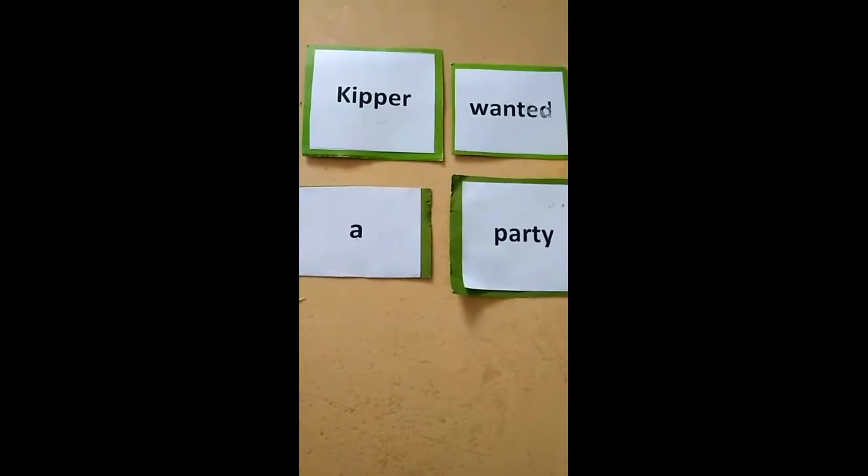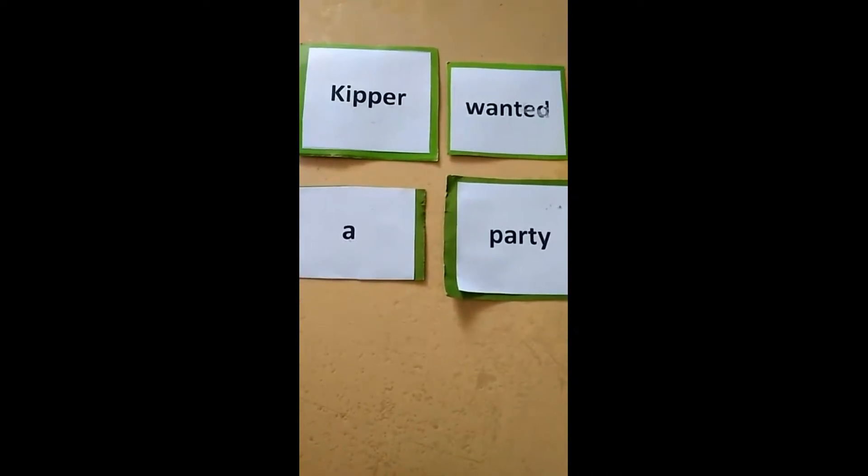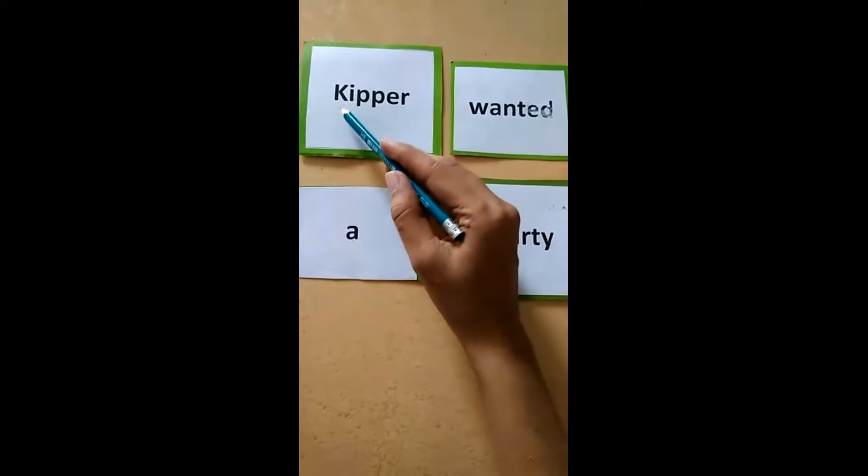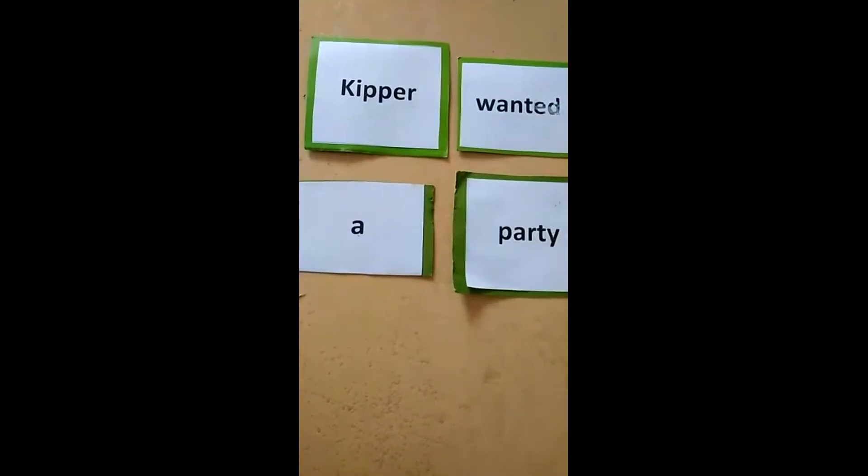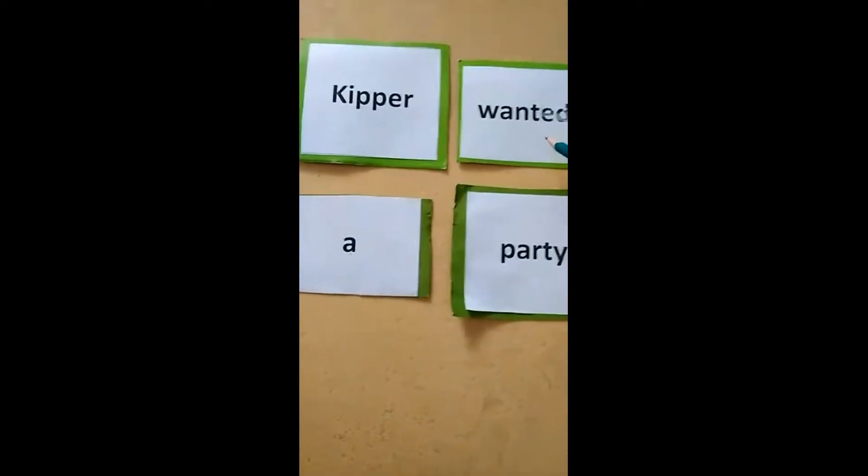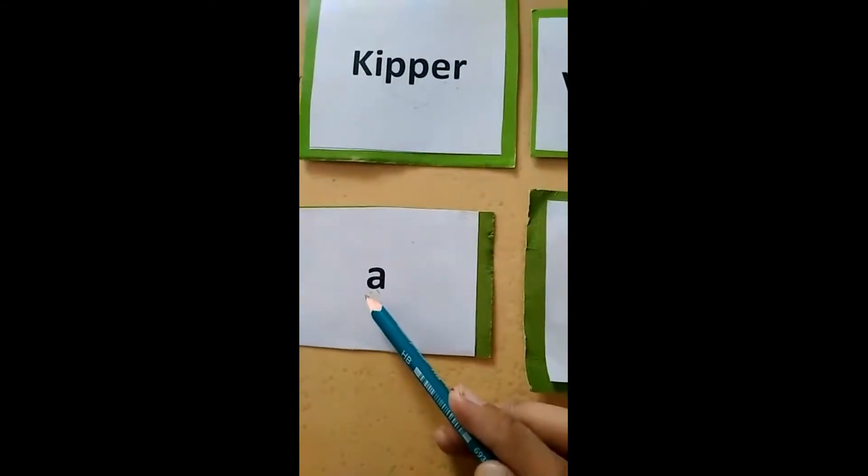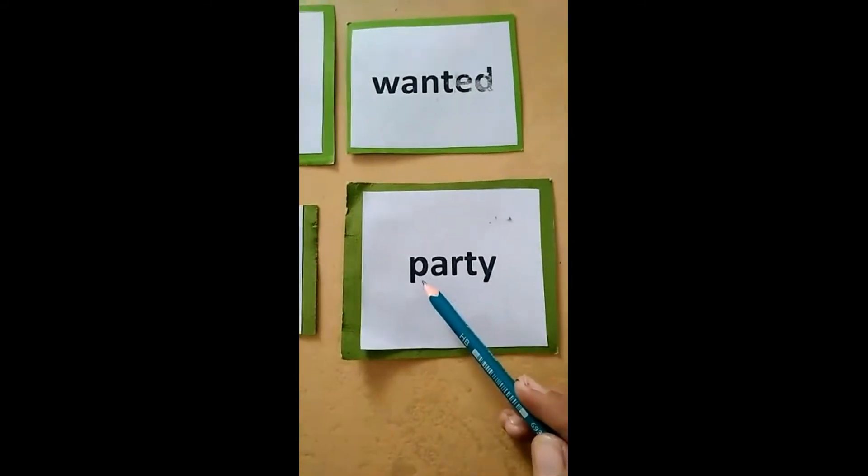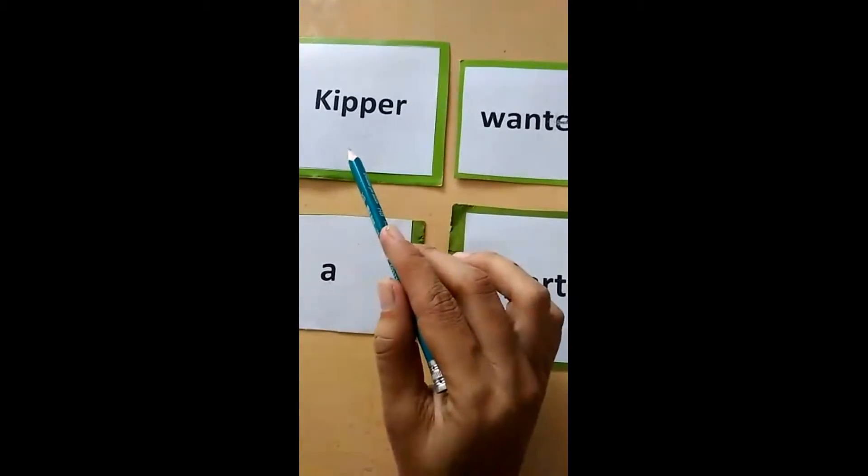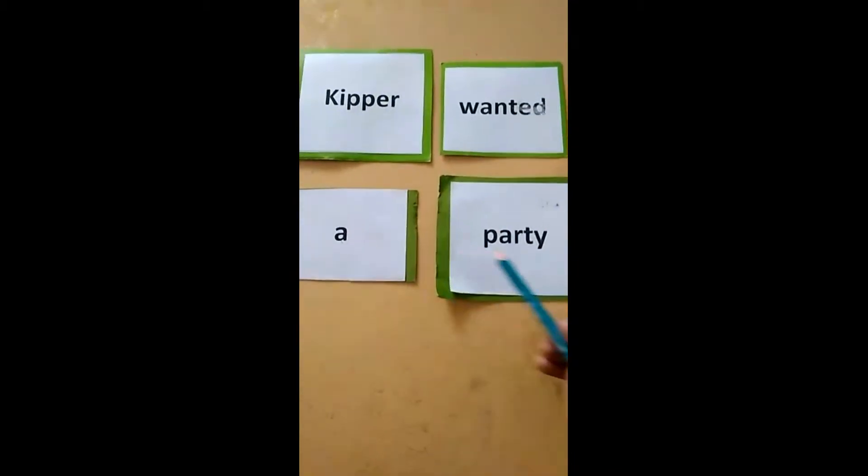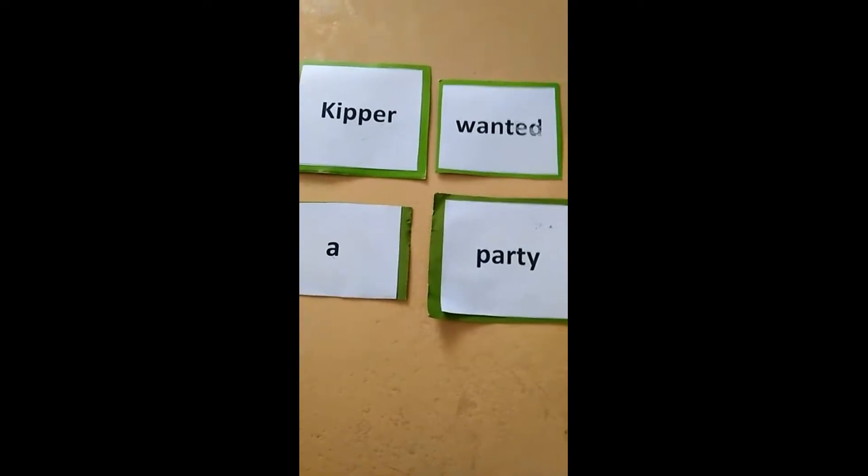And now we are revising some words you have learned before. آپ اس سے پہلے بھی کچھ words یاد کر چکے ہیں. آج ہم اسے revise کریں گے. Kipper K-I-P-P-E-R Kipper. Wanted W-A-N-T-E-D Wanted. Party P-A-R-T-Y Party. Kipper Wanted A Party. Now we will revise next line.